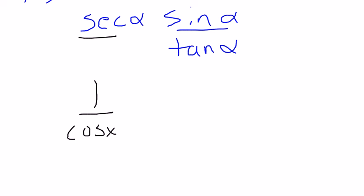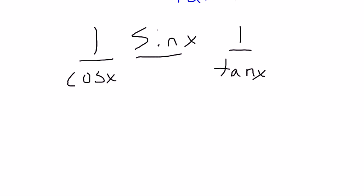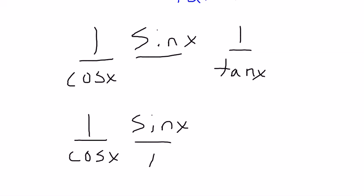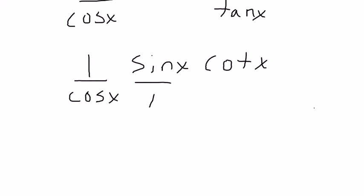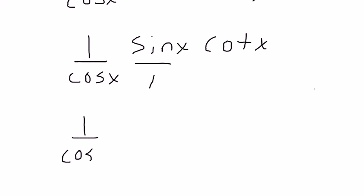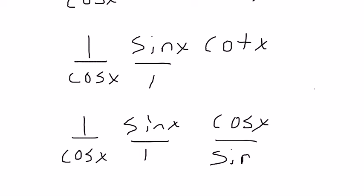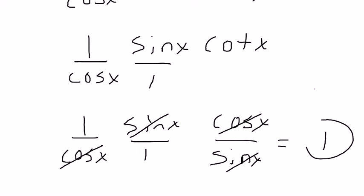I'm going to break this next part up into sine over 1 times tangent. 1 times tangent is cotangent. Cotangent, according to page 372, is cosine over sine. And if I multiply all these together, the cosines cancel, the sines cancel, and I'm left with 1. So this times this equals 1.